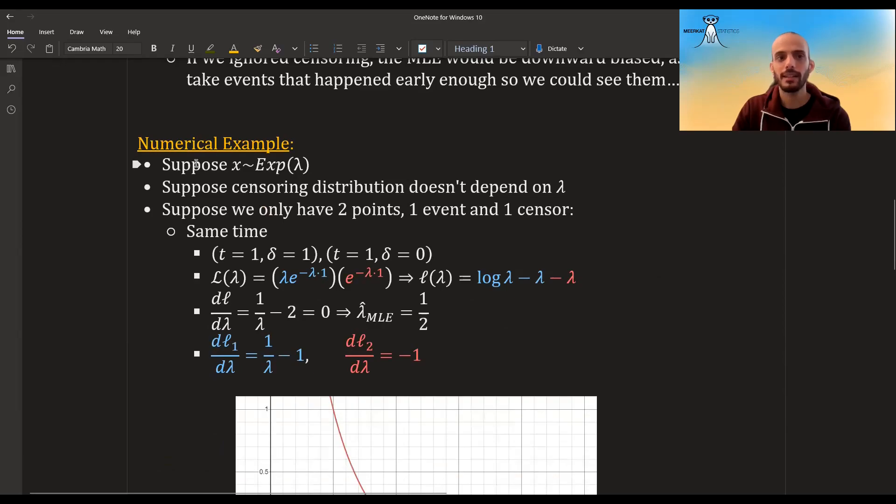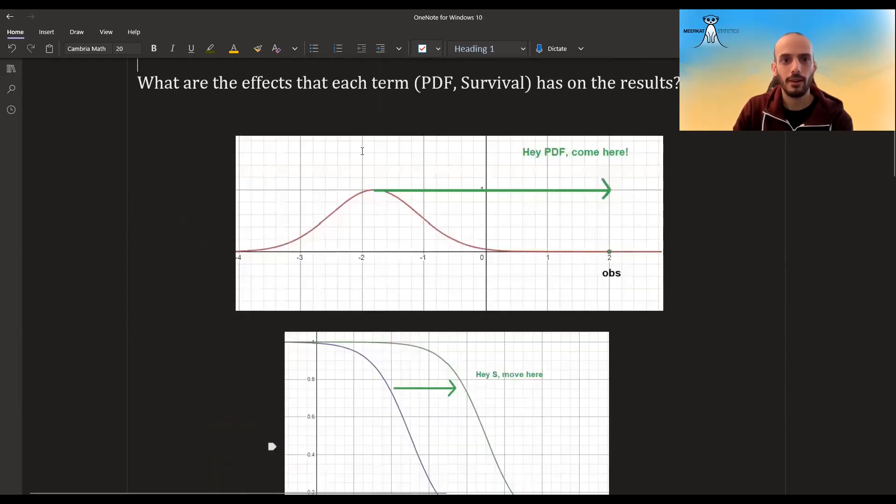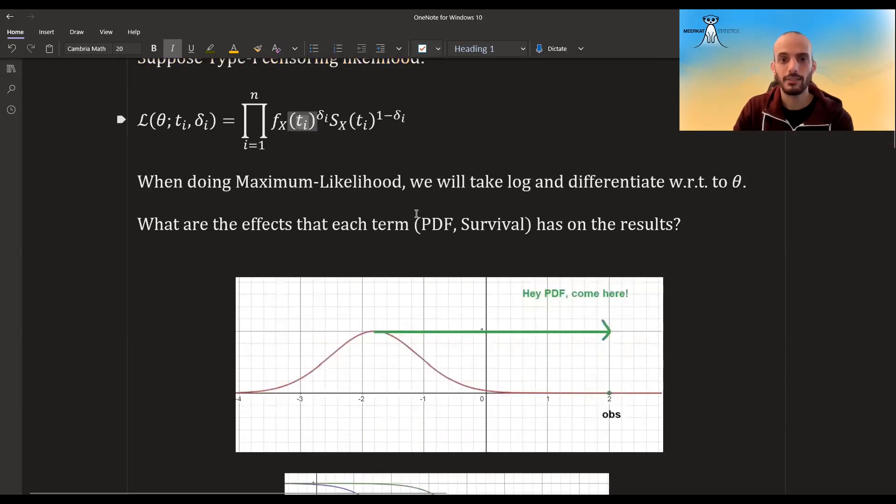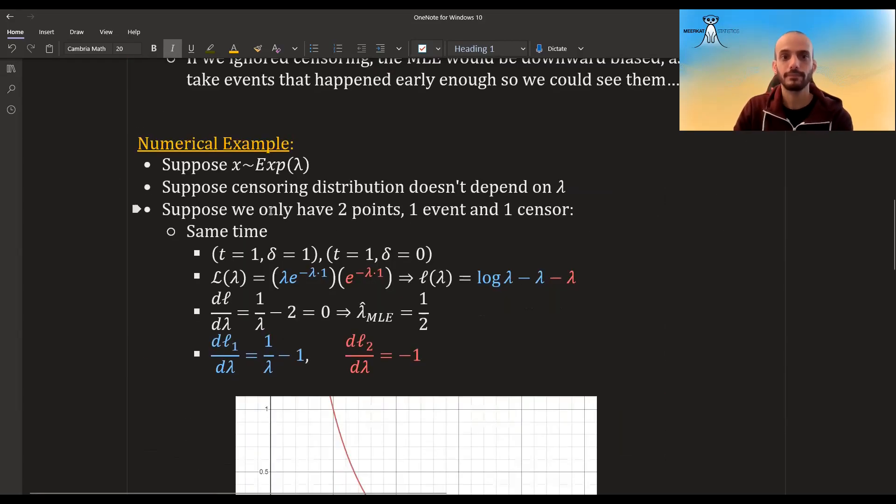This time information gives a lot of value to you, and you don't want to discard it. You don't want to just do logistic regression. You do want to model the time. And maybe I'll show a small numerical example. Suppose x distributes exponential with a parameter lambda that we are trying to estimate, and suppose censoring distribution doesn't depend on lambda. So for our sake, even if it's not Type 1 censoring, when we do maximum likelihood, we only look at this. We don't care about the censoring distribution. We can ignore it. Suppose we have two points, one event and one censored. And for the first scenario, suppose that they are at the same time. So we have this data point 1, which is an event, and this data point, which is censored, and they both happen at 1.